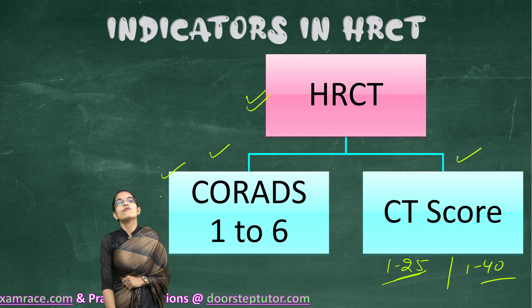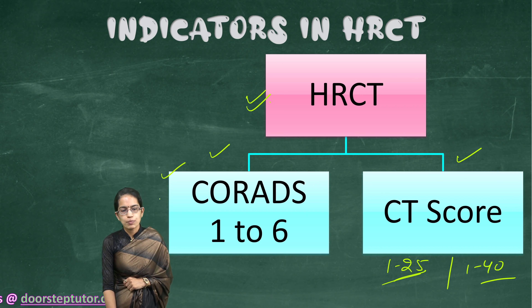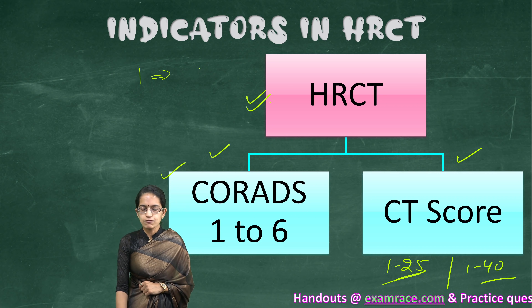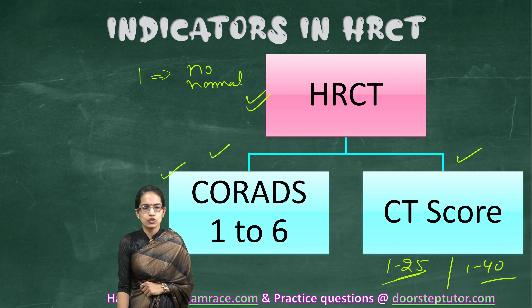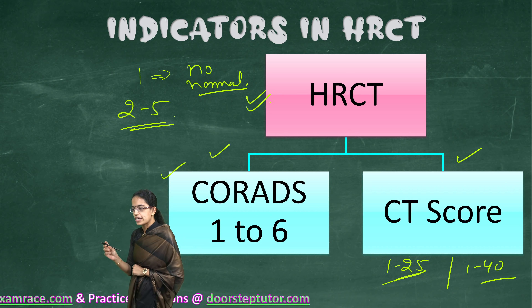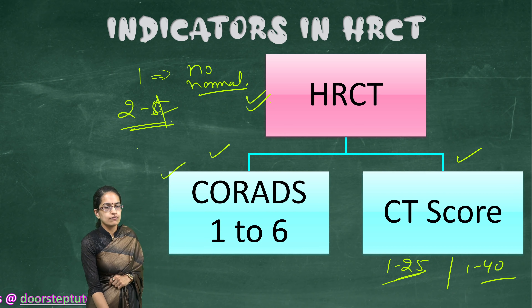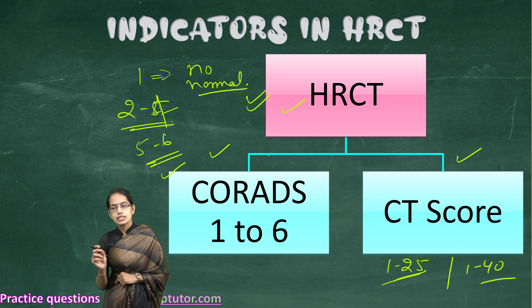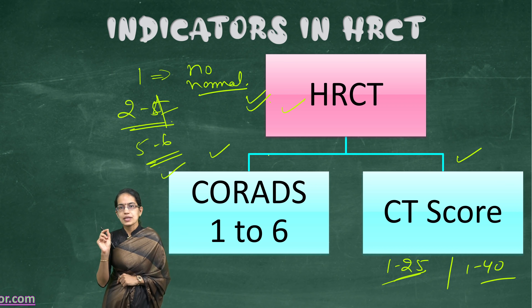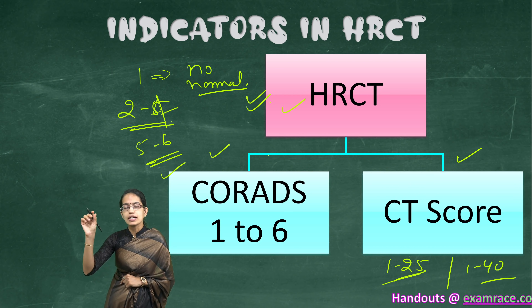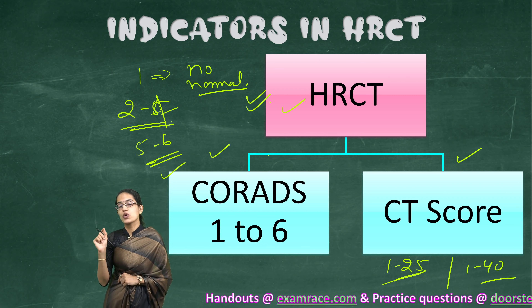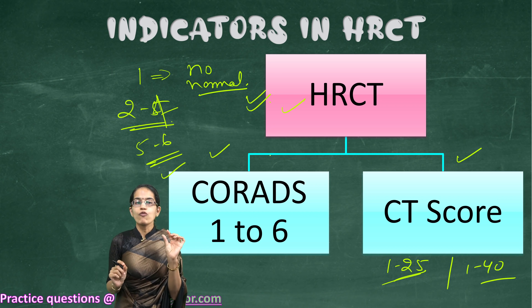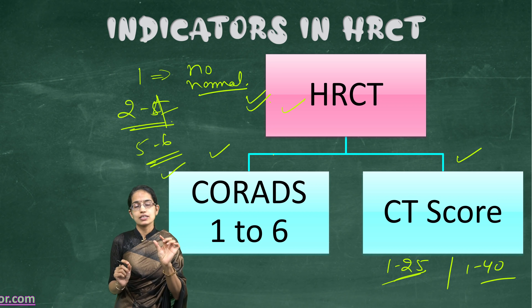The next important component of the HRCT test is CO-RADS, which stands for COVID-19 Reporting and Data System. It uses a scale of 1 to 6. A score of 1 indicates negative COVID — no lung infection or a normal lung. Scores of 2 to 4 indicate susceptible viral involvement, while scores of 5 to 6 indicate very high involvement. These scores are based on the presence of glass-like opaque particles in the lung cavity, which serve as markers for COVID severity and the proportion of lung damage.